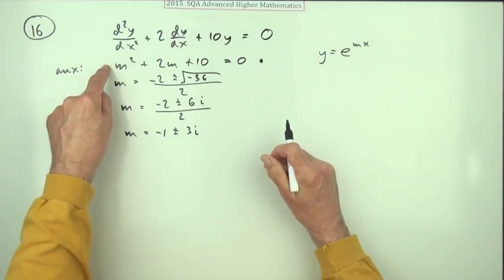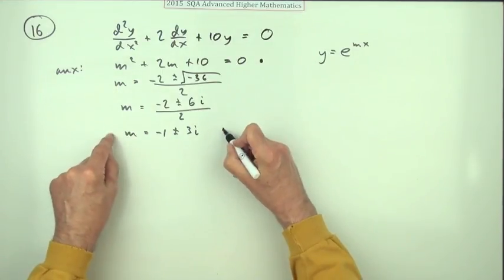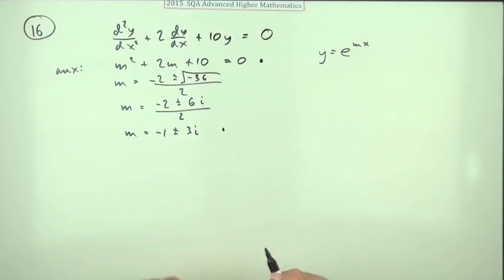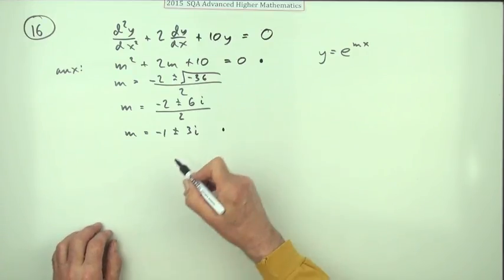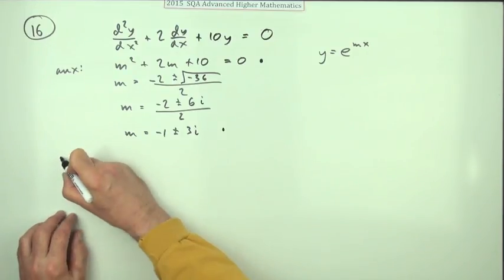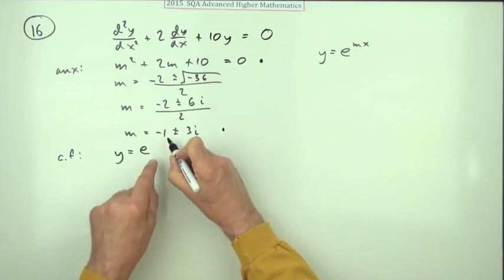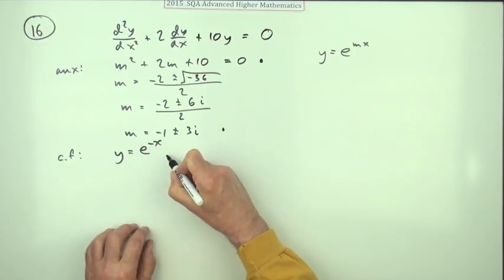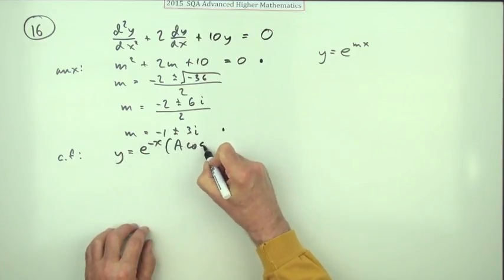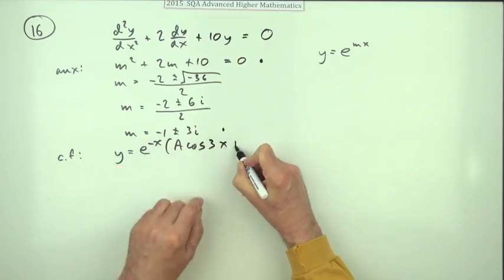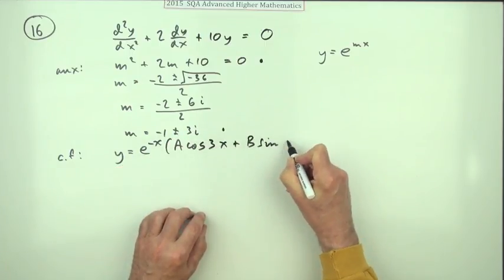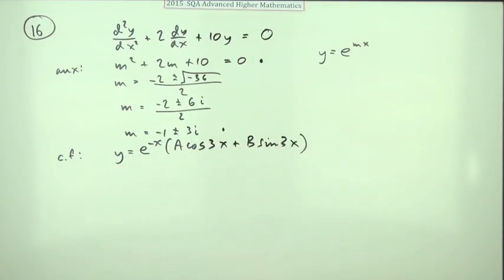There's actually two marks here: one mark for getting this auxiliary equation and another mark for solving it. But the statement after that is fairly straightforward. That means you've got for your complementary function y equals e to the negative x times a cos 3x plus b sine 3x. And stating that gives you the third mark.